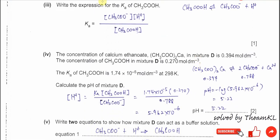Part three: write the Ka expression for ethanoic acid. Ethanoic acid dissociates to form the ethanoate ion and H⁺. Therefore, Ka equals the concentration of ethanoate ion times the concentration of H⁺, divided by the concentration of ethanoic acid: Ka = [CH₃COO⁻][H⁺] / [CH₃COOH].